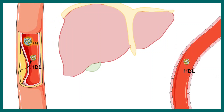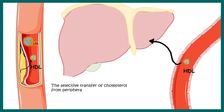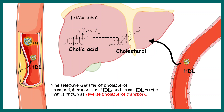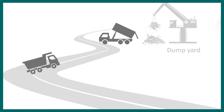HDL picks up cholesterol from atherogenic plaques where LDL has deposited excess cholesterol, then moves to the circulation and returns it to the liver. This selective transfer is known as reverse cholesterol transport. Once inside the liver, the cholesterol can be utilized to produce cholic acid, which is used to produce bile salts — meaning the cholesterol is recycled and repurposed for another production.